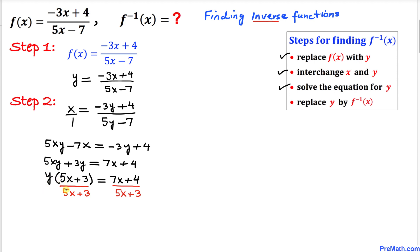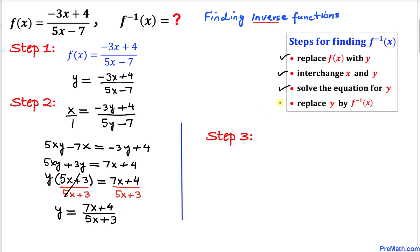Now we want to isolate y, so we divide both sides by 5x plus 3. The 5x plus 3 cancels on the left, so y equals 7x plus 4 divided by 5x plus 3.